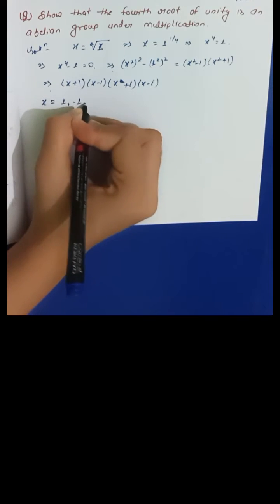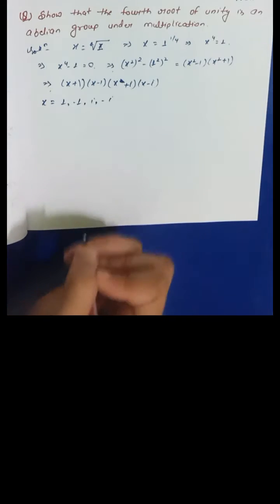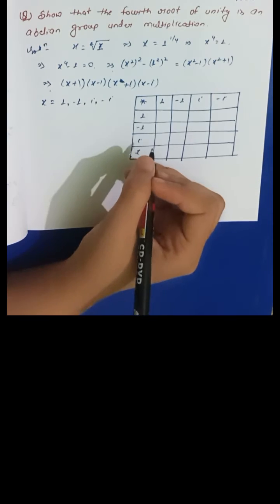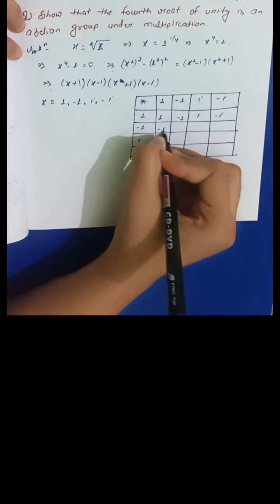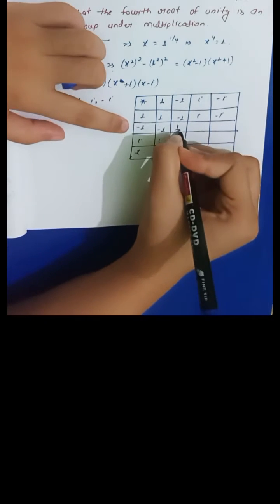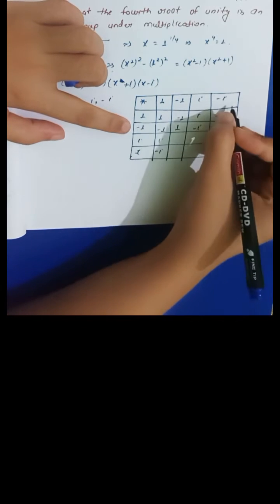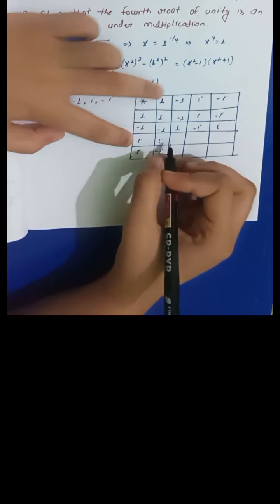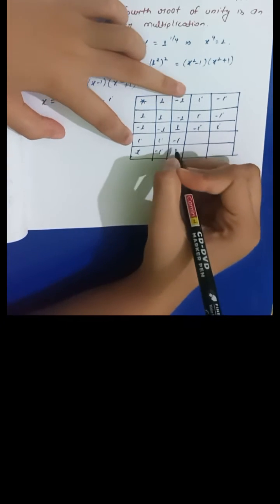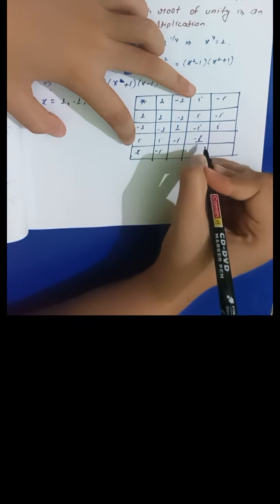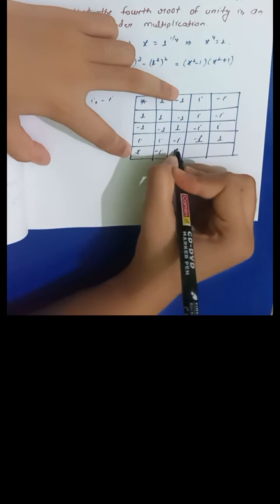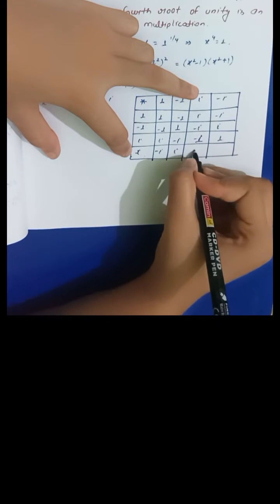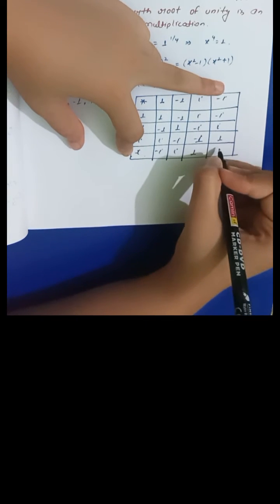So the roots are x = 1, -1, iota, -iota. Now we make the composition table. For example: 1×1=1, (-1)×1=-1, iota×iota = iota² = -1, (-iota)×(-iota) = iota² so -(-1) = 1, and (-iota)×(-iota) gives -1 as needed.